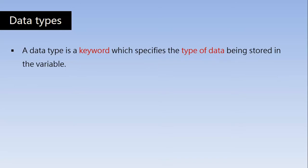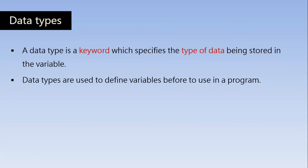All data types are keywords. C programs have a set of 32 keywords, and some of them are data types which specify the type of data of the variables. Data types are used to define variables before using them in a program. In the declaration section, we have to declare the variables with the data types, so the compiler will recognize the type and number of variables before executing the program.